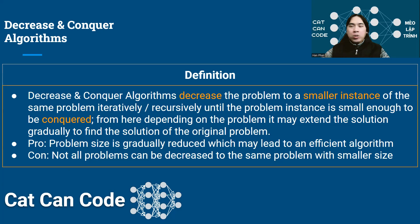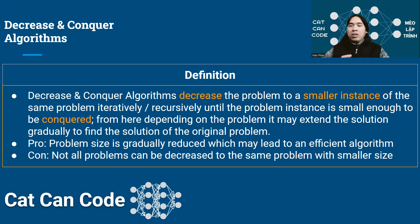Before we jump right into the decrease and conquer algorithms, let's look at the definition. If you stick around until the end of the video, I will show you some very practical Python examples of this decrease and conquer strategy. So when we talk about decrease and conquer algorithms, we try to decrease the problem to a smaller instance of the same problem, either through iteration or recursion, until the problem instance is small enough to be conquered. From here, depending on the problem, it may extend the solution gradually to find the solution of the original problem. Sometimes through the reduction, you reduce to the point that you just find the solution for the original problem directly.